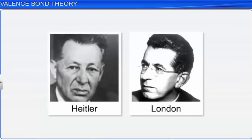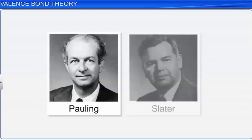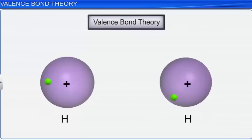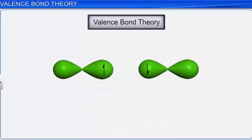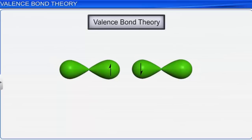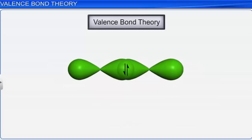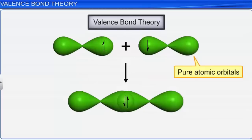The valence bond theory was introduced by Heitler and London and further developed by Pauling and Slater. It explains the formation of covalent bonds. According to this theory, a covalent bond is formed when a pure valence atomic orbital of one atom overlaps with a pure valence atomic orbital of another atom. Each of the overlapping orbitals contains an unpaired electron of opposite spin, and the electron pair is shared by both atoms. The strongest bond is formed when the orbitals overlap to the maximum extent.